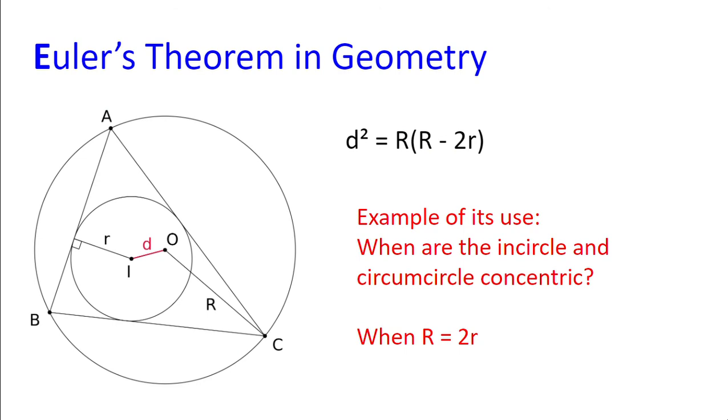Finally, we have Euler's theorem in geometry. And this says that the distance squared between the incircle and circumcircle of a triangle is the circumcircle's radius multiplied by the circumcircle's radius minus 2 multiplied by the radius of the incircle.